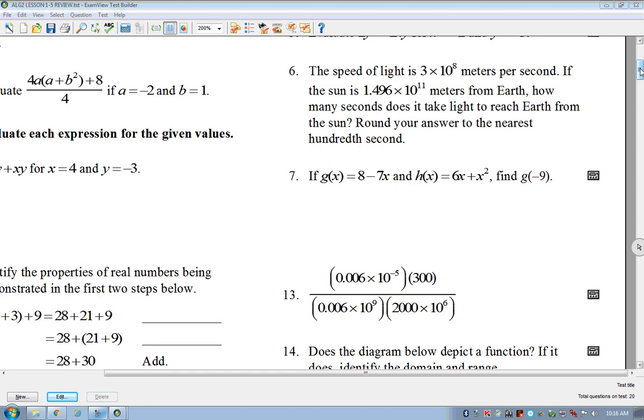Okay, next on the list is 7. Who was 7? Okay, Joule was 7. It says if g of x equals 8 minus 7x, and h of x equals 6x plus x squared, it says find g of negative 9. This is actually pretty nice, Joule, because they're just saying g, do I need to plug negative 9 into the h equation? No. So I don't have to worry about him at all. All I really have to do is take this 8 minus 7x and plug in negative 9 where I have x at.